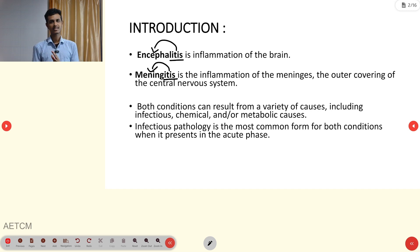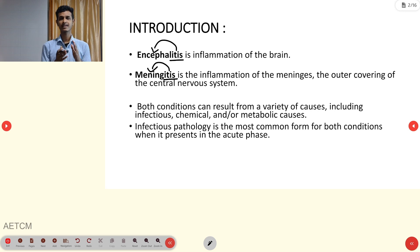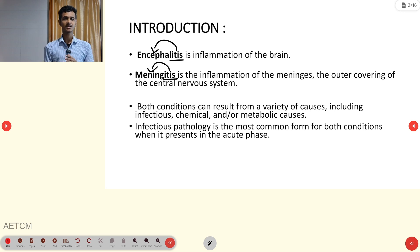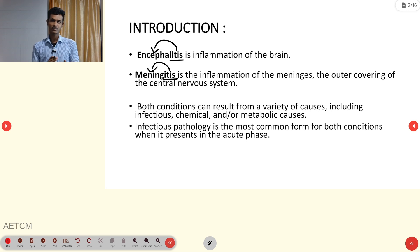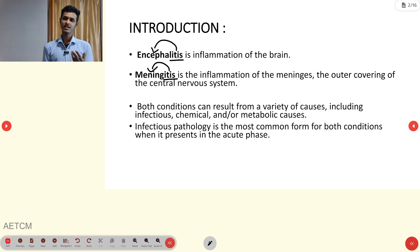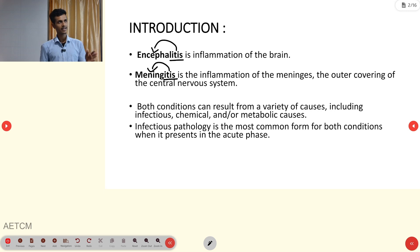For both conditions, the causes include many things — infectious causes, chemical causes, and metabolic causes. But in the most acute phase, infectious pathology is the most common cause for both encephalitis and meningitis.